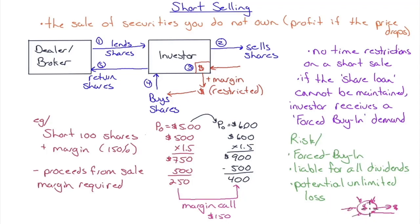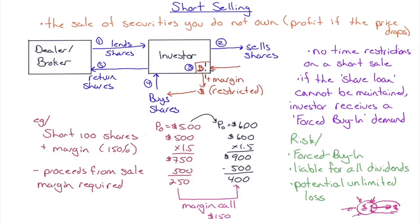Here's how short selling works: the dealer lends shares to the investor; the investor sells those shares and the proceeds come into the account — but the money is segregated, shown as a restricted line item earmarked to repurchase the shares. It's the broker who earns interest on those proceeds, not the short seller. The investor must also post additional margin, so the dealer may hold up to 150% of the share value.